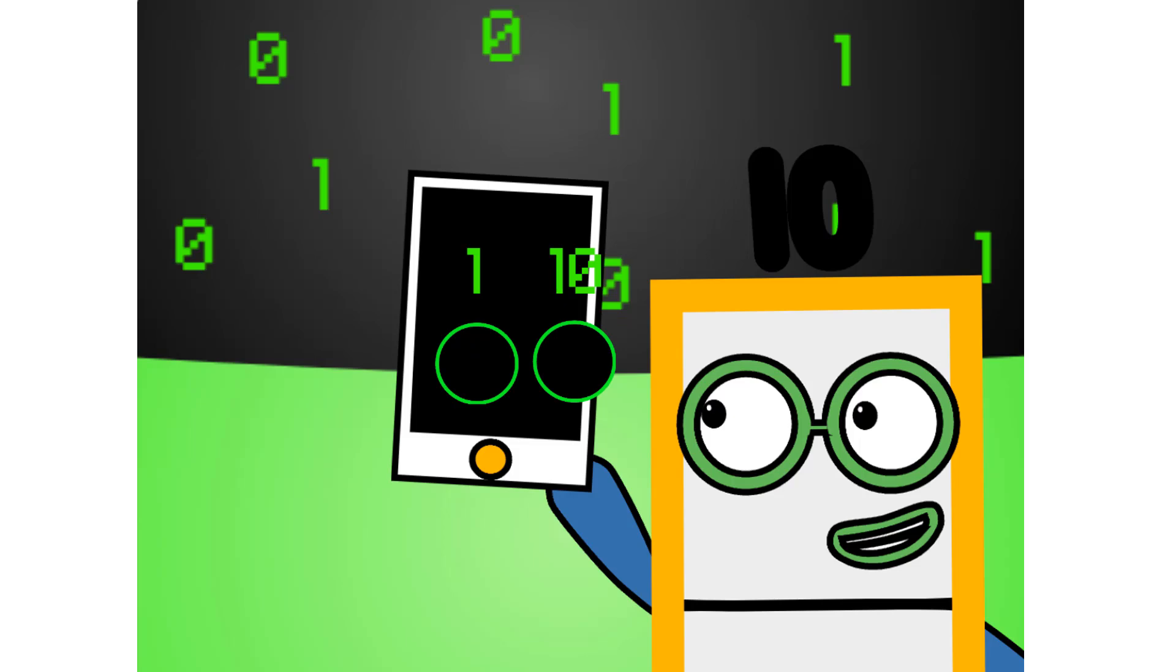10 is my number. In decimal, it's 2. To count to me in binary, it's going to be really short. Let's hear it. 1, 1, 0.